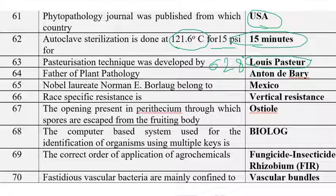The father of plant pathology is Anton de Bary. Nobel laureate Norman E. Borlaug is associated with Mexico, where CIMMYT (Centro Internacional de Mejoramiento de Maíz y Trigo — the international center for wheat and maize research) is located. Borlaug is considered the father of the green revolution, which started with wheat and maize.